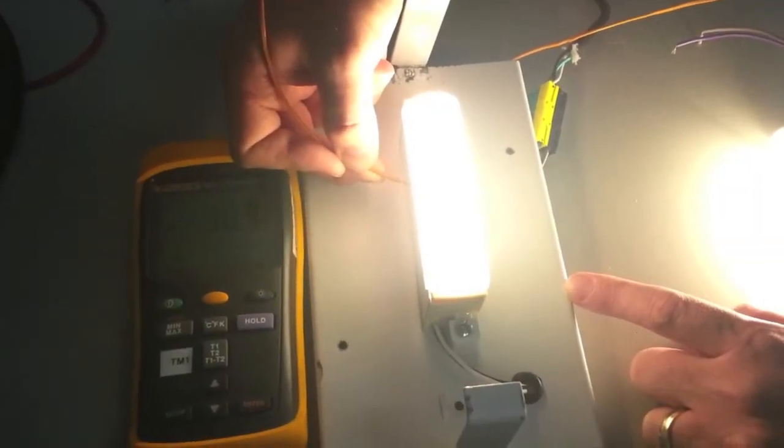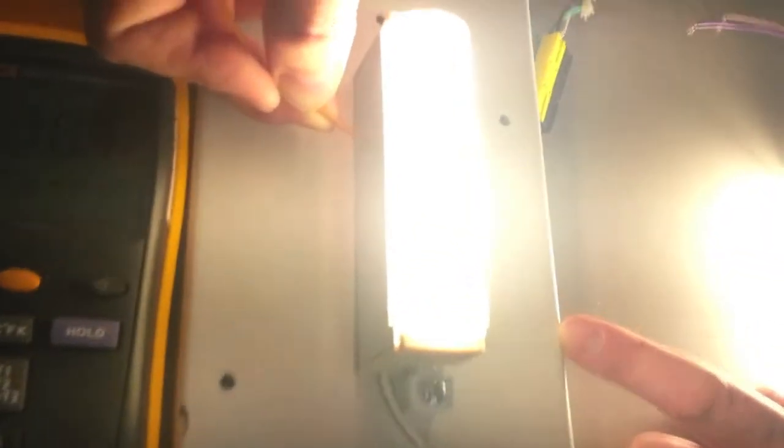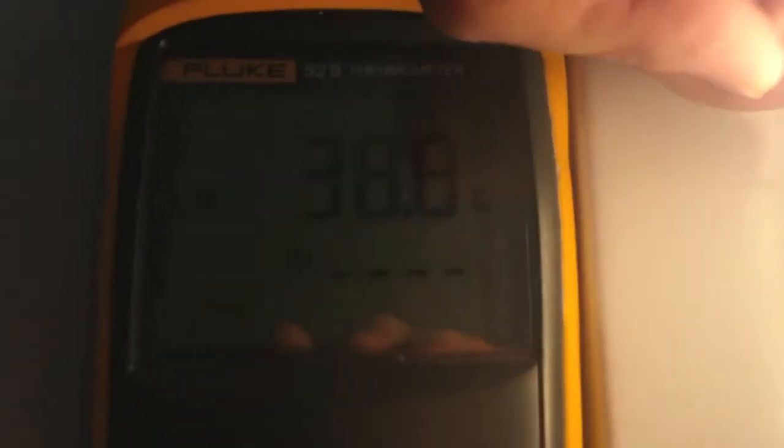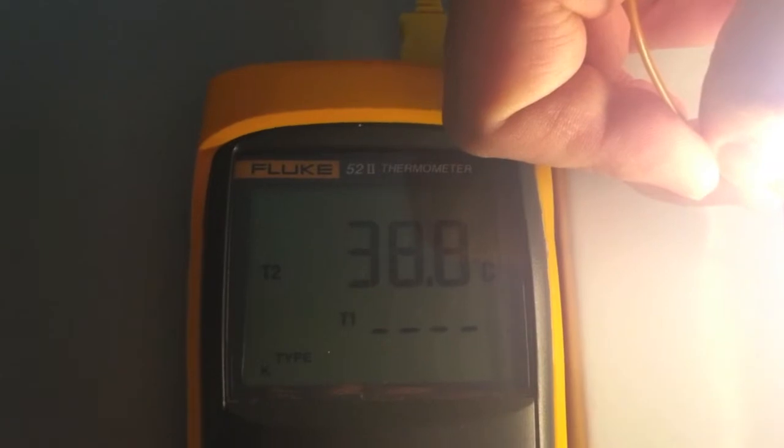The Terralux linear engine mounted on a back plate. We're taking the temperature from the engine itself, and we're registering a temperature of 38.8 degrees Celsius.